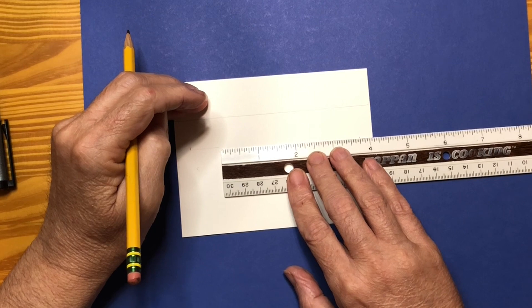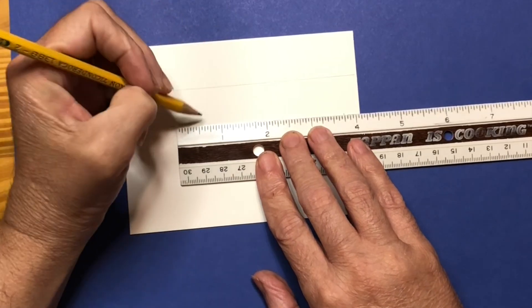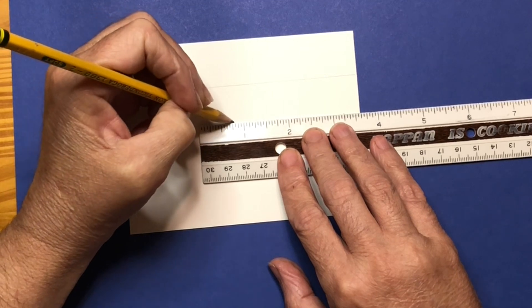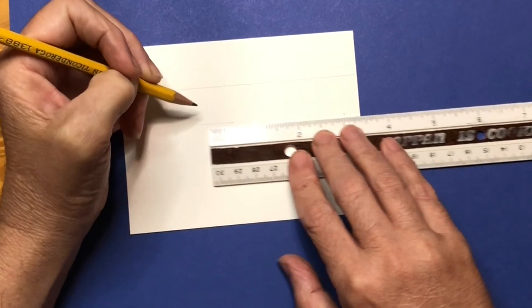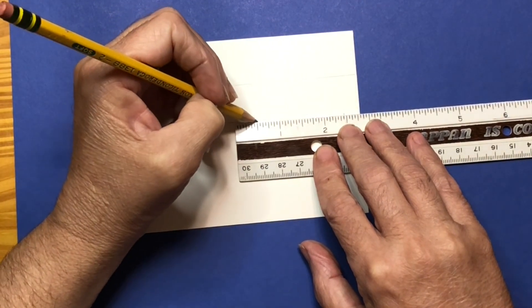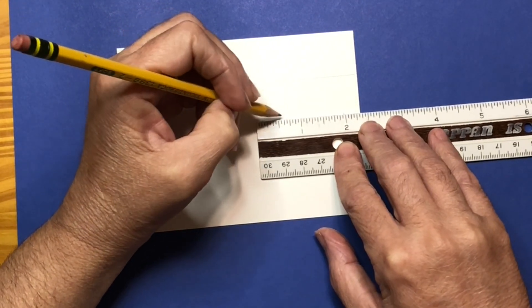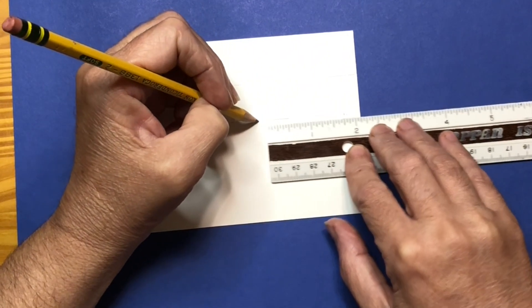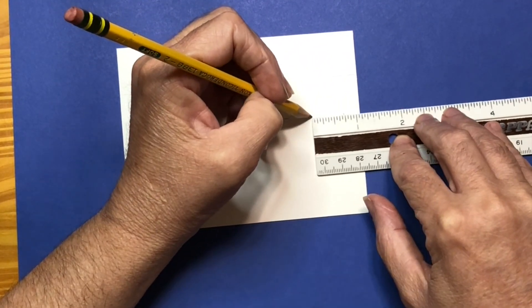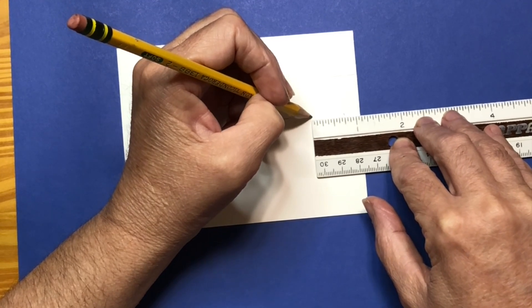Then I'm going to have a half inch between it and then I'm going to do another three quarter. Then I'm going to do a half inch space, which will be here, and do another three quarters. Then do another half inch space and do another three quarters. And look at that.